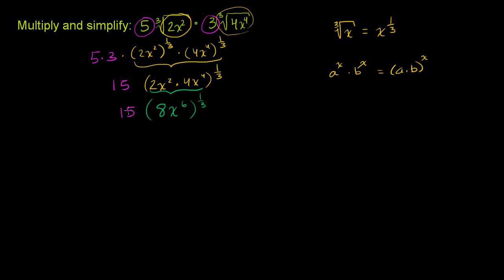We can use the same property again: (8x to the 6th) to the 1/3 is 8 to the 1/3 times x to the 6th to the 1/3. Now, 8 to the 1/3 is the cube root of 8. Since 8 is 2 cubed, 8 to the 1/3 is 2. And x to the 6th to the 1/3 is x to the 6 times 1/3, which is x to the 2nd, or x squared. So we have 15 times 2, which gives us 30, times x squared.